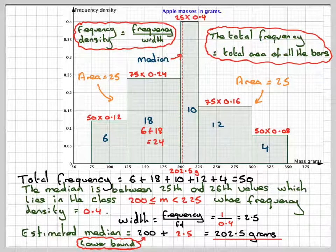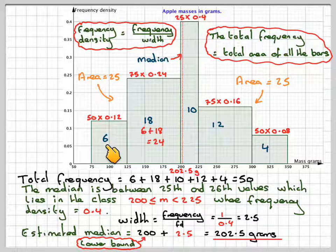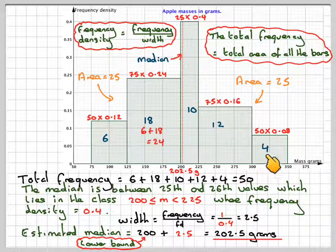In order to make the frequency chart, it's going to be quite easy, because we've now worked out each frequency. That's 6, that's 18, that's 10, that's 12, that's 4.